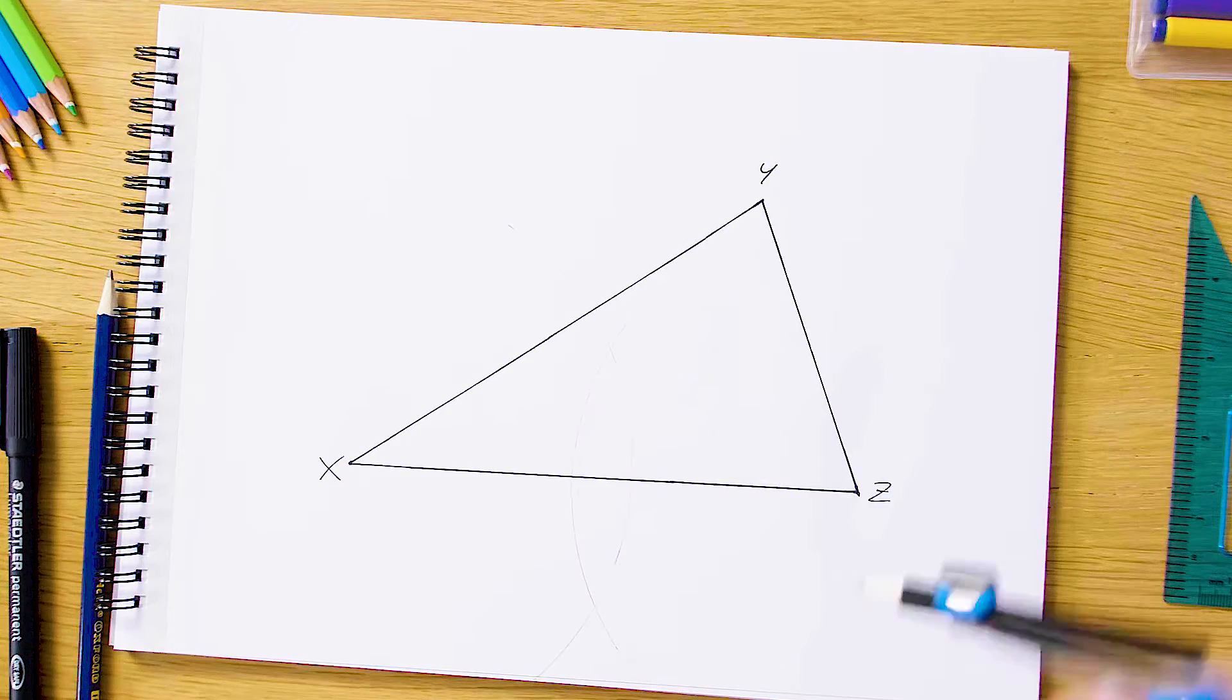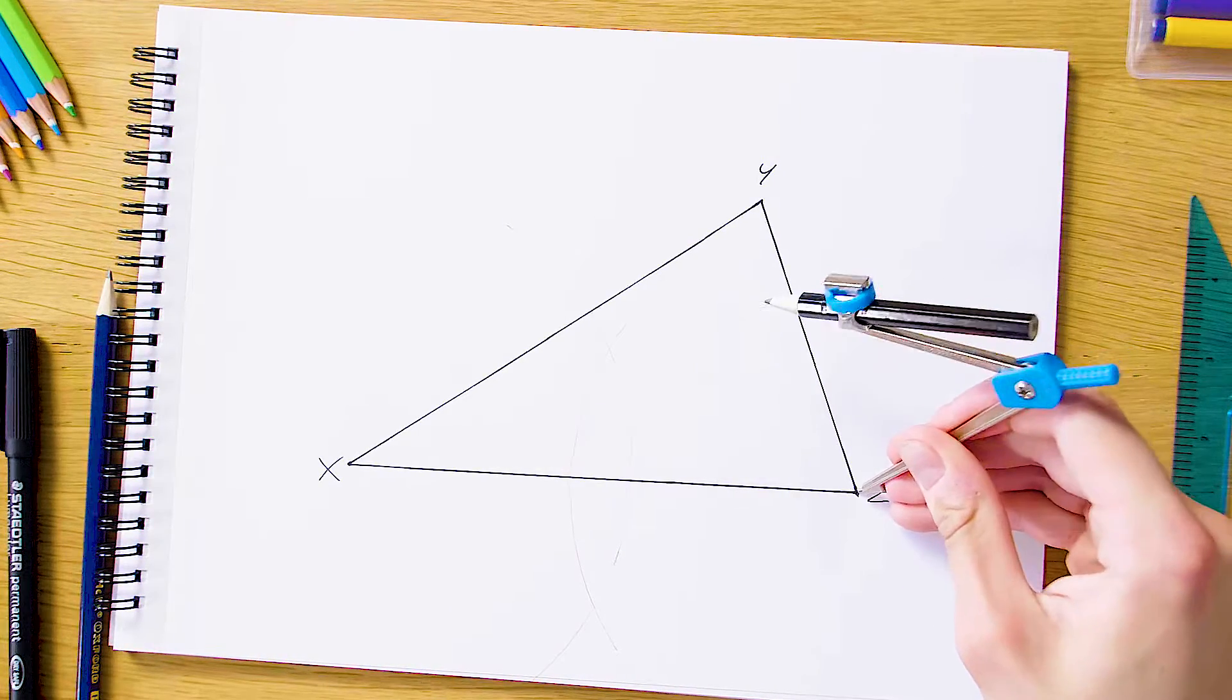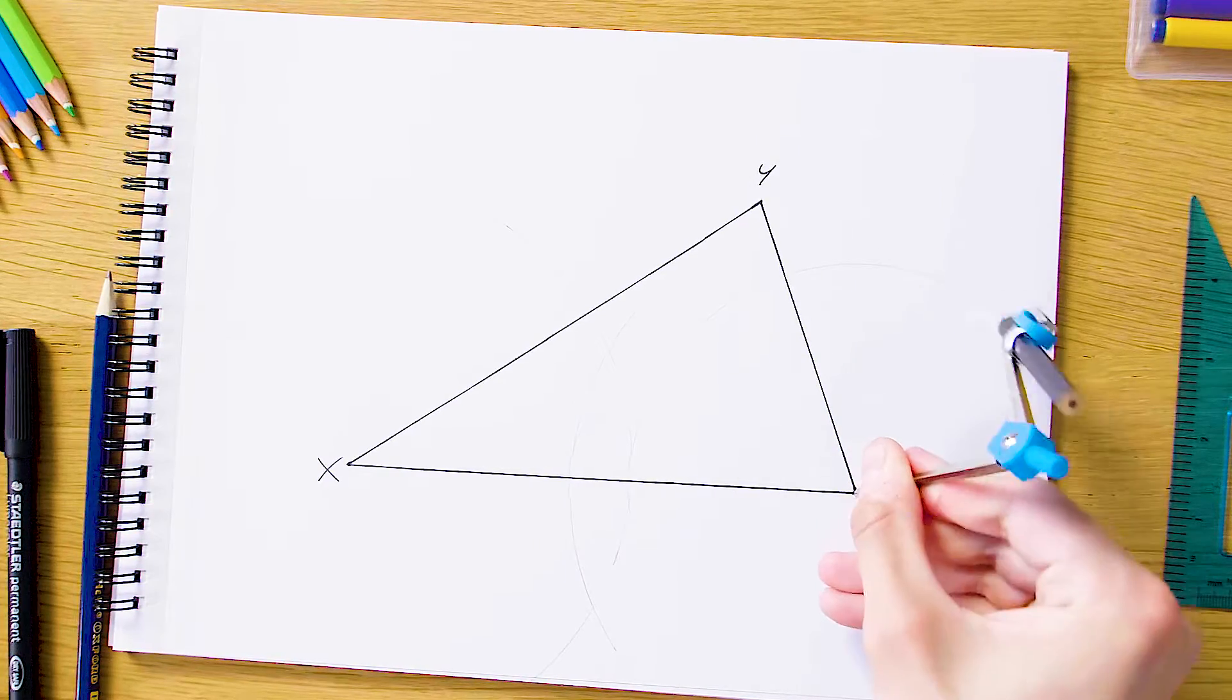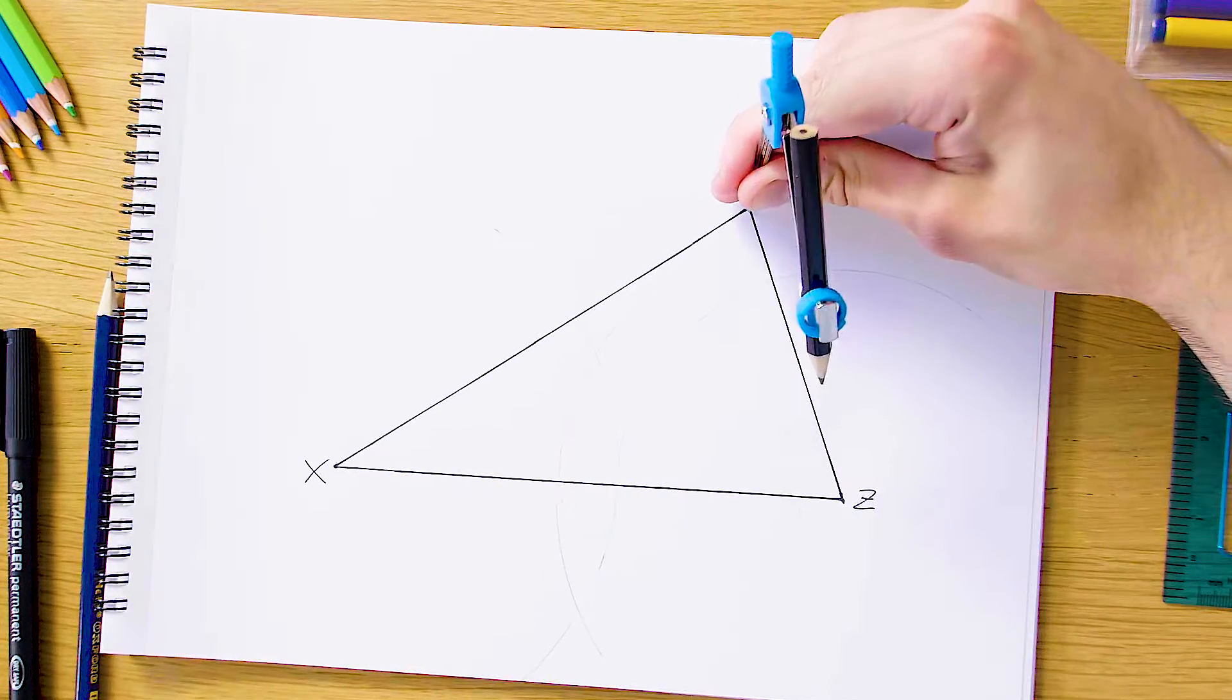To bisect the side YZ, we're going to make sure again our compass is long enough to exceed half of the side length and swing another arc, first from the vertex Z and then again from Y.